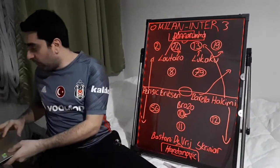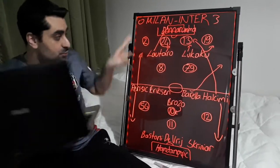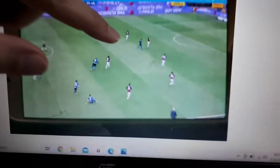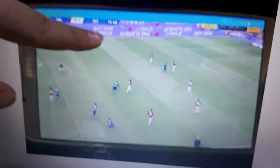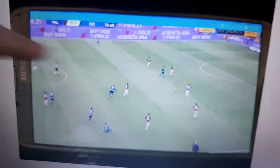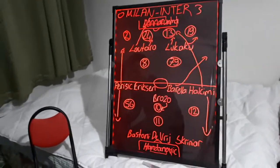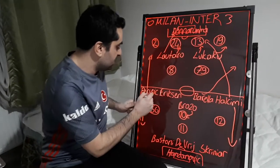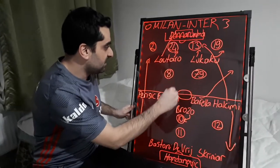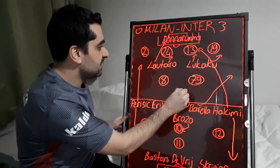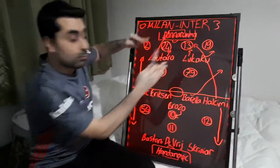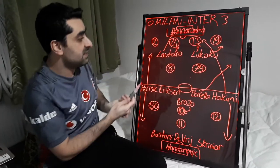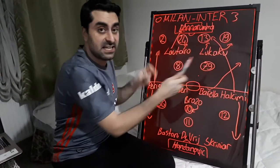Perisic found empty spaces on the left all game — you can see it here. For the third goal of Inter, Lukaku scored and Perisic provided another assist. Perisic gave a pass to midfield, Lukaku got the ball, carried it forward, and scored Inter's third goal.